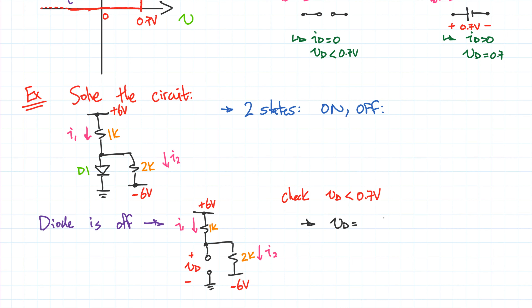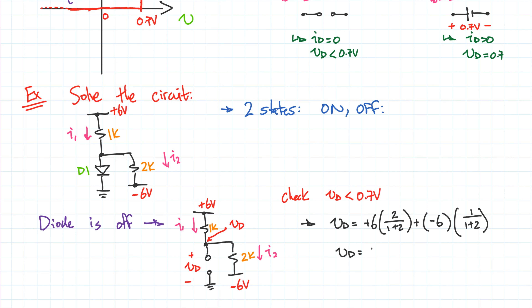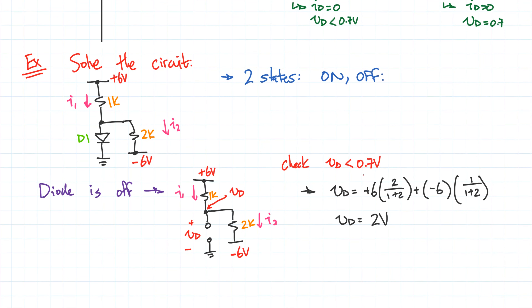Using voltage division — which is linked in the description box if you need a refresher — VD is equal to 6 times 2 over (1 plus 2) from the positive source, plus the contribution of the negative 6 source across the 1k, which is 1 over (1 plus 2). Solving this gives VD equals 2 volts. But we needed VD to be less than 0.7 volts — since VD equals 2, which is greater than 0.7, this assumption is invalid.